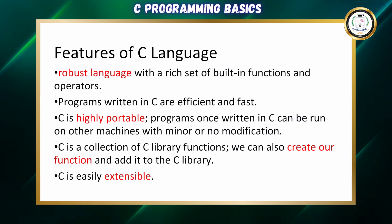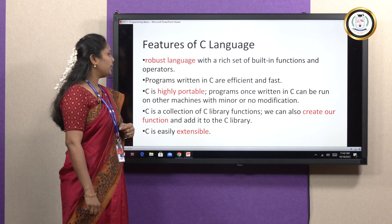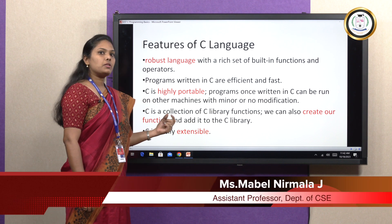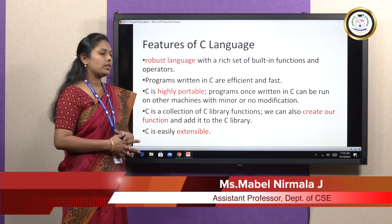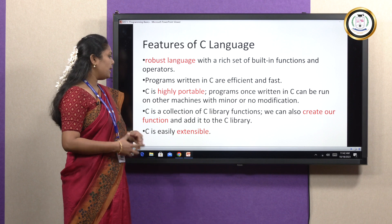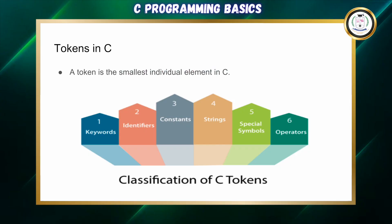C comes with a rich set of inbuilt functions, which is why it is called robust. C programs are very efficient and fast in execution, and they are highly portable. It also comes with a rich set of C library functions. We can create our own functions and new C libraries, and C is easily extensible.